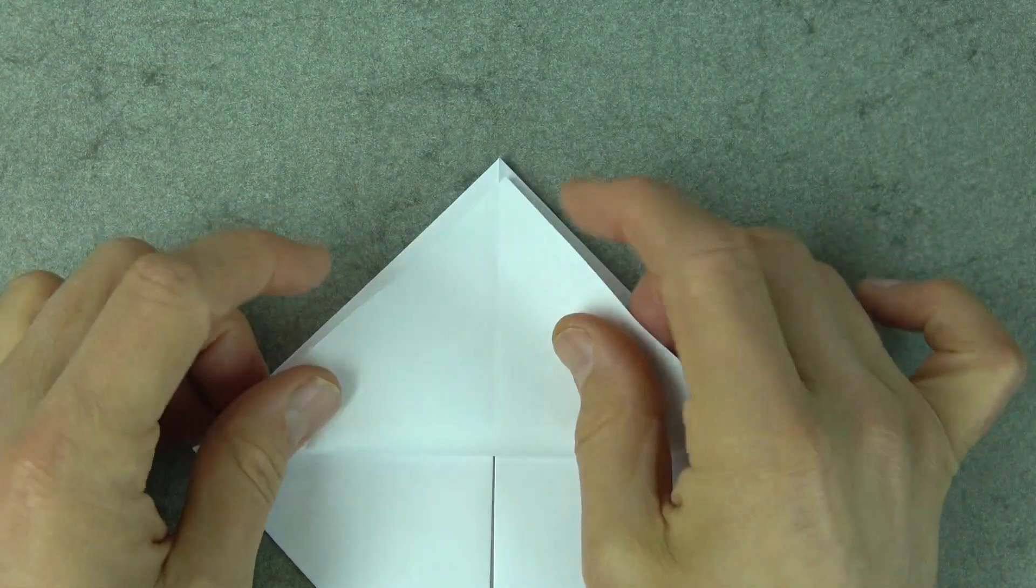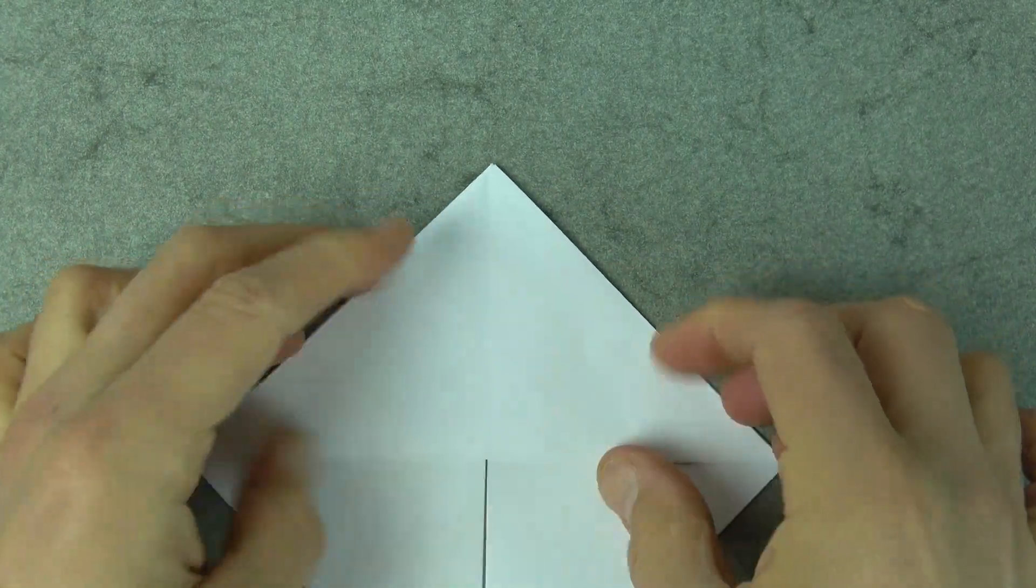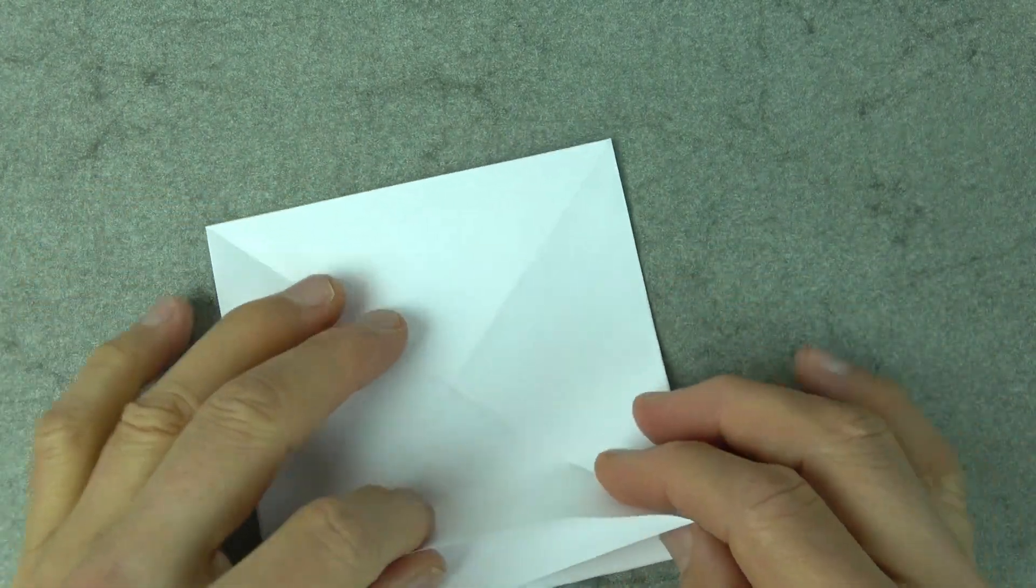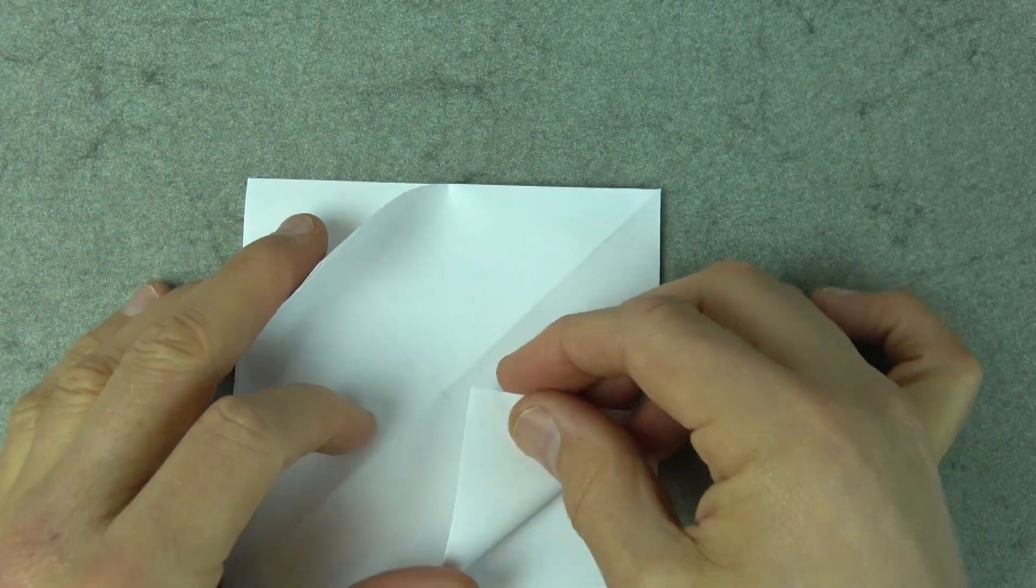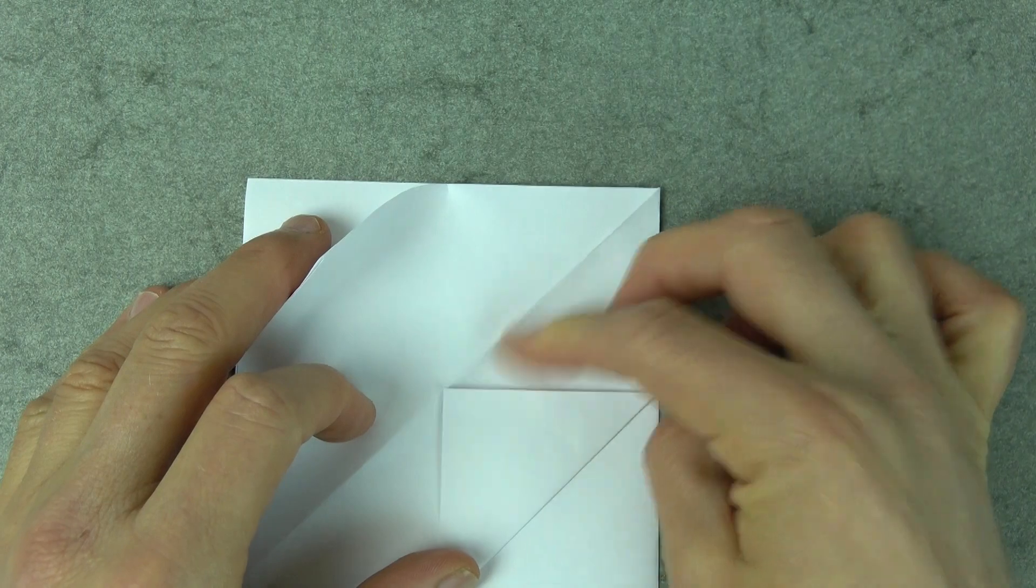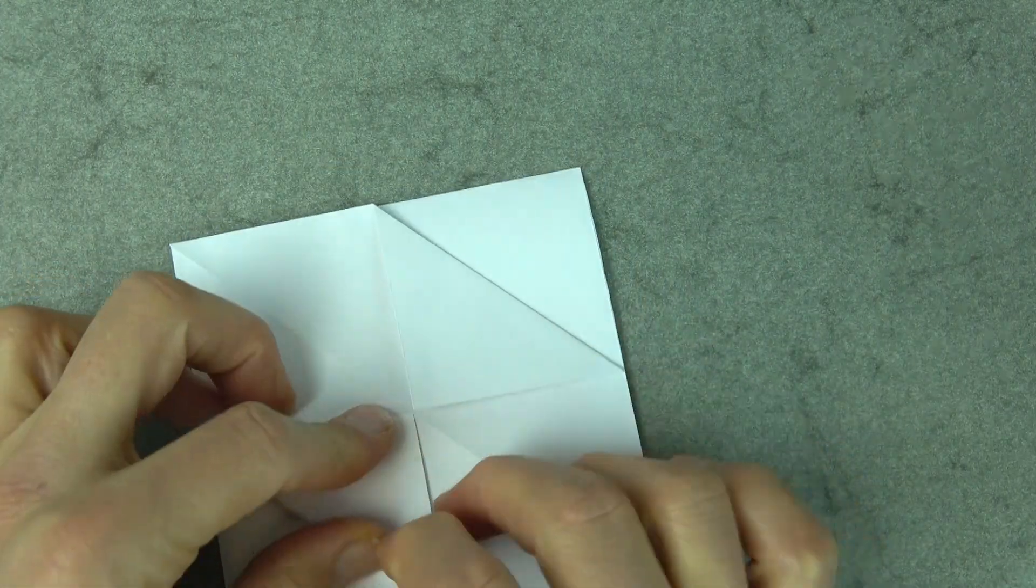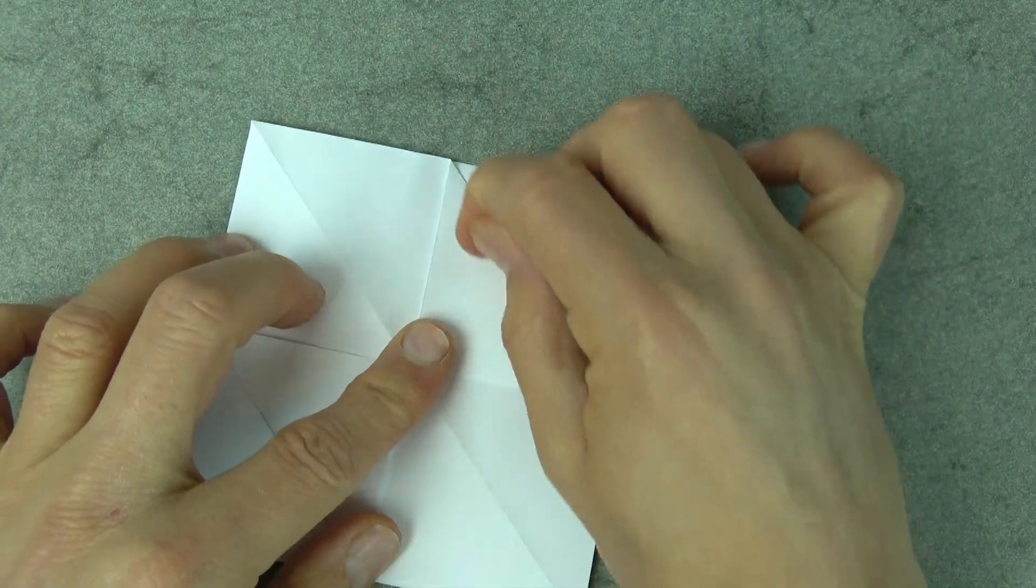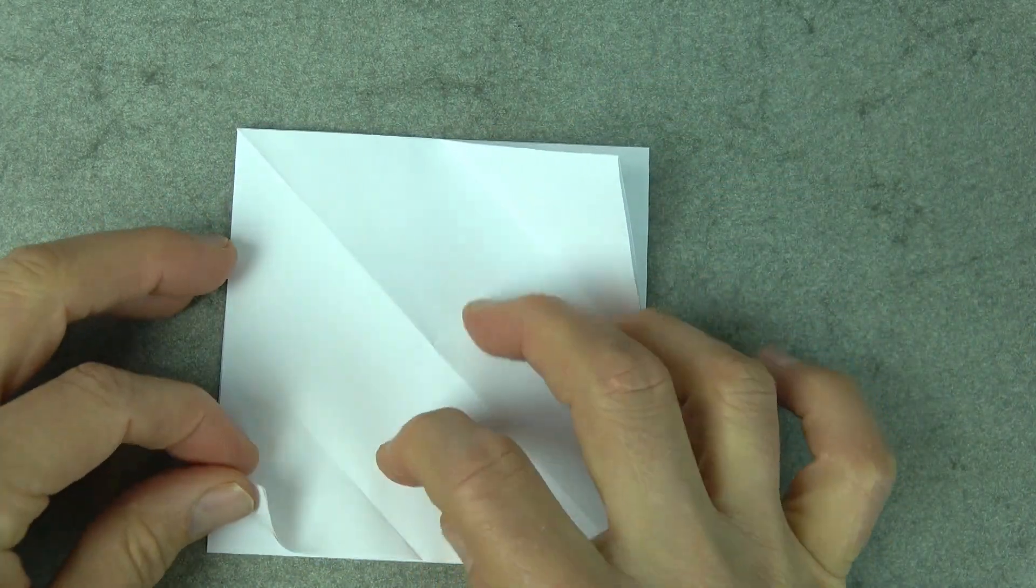And now, fold this front flap up. Okay, and unfold, and fold the two side flaps to the middle point. And unfold them, and fold them to the intersection points.